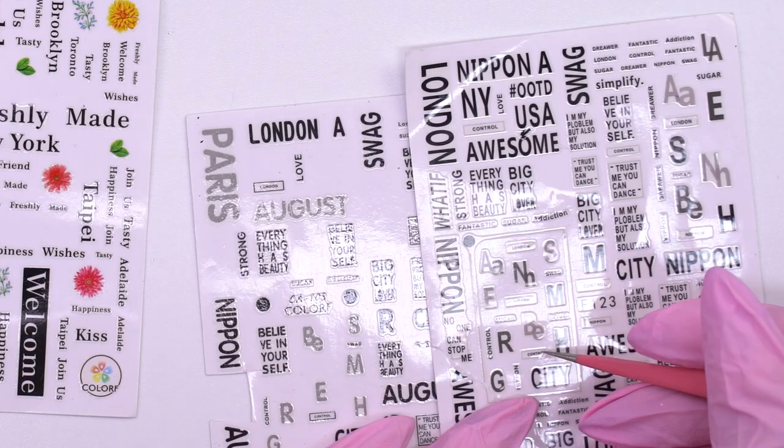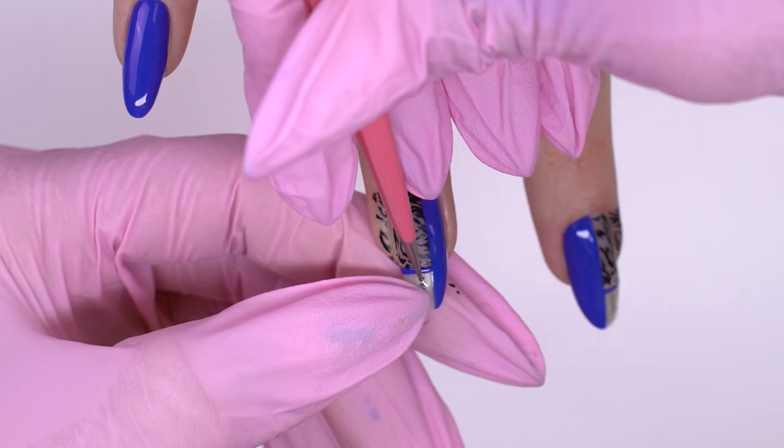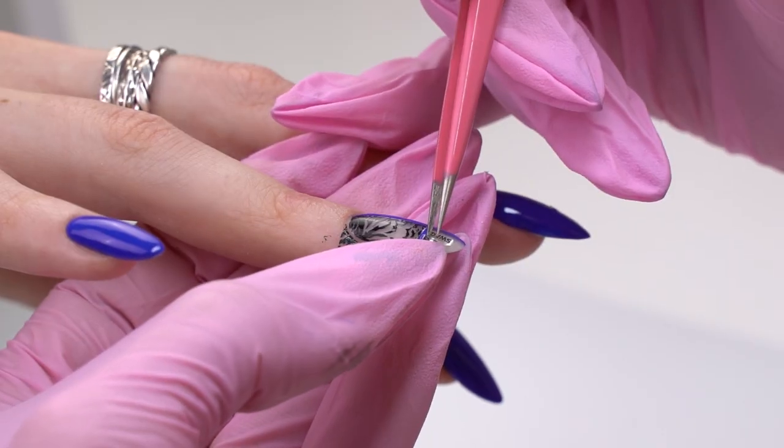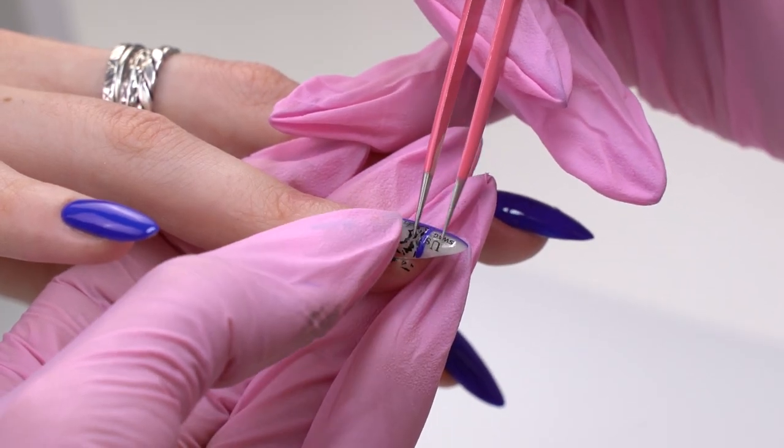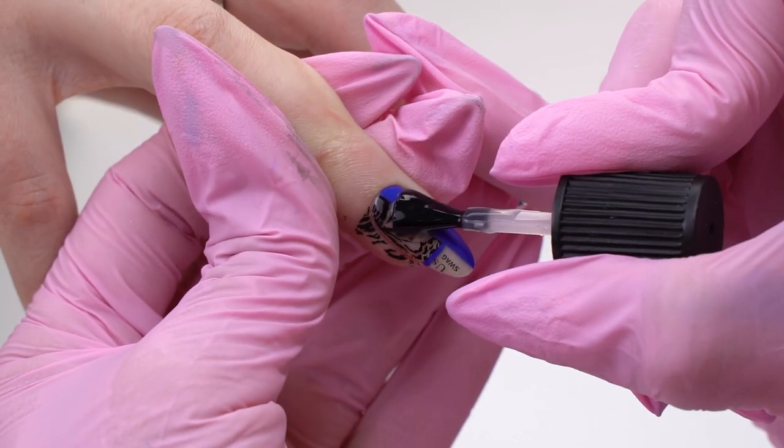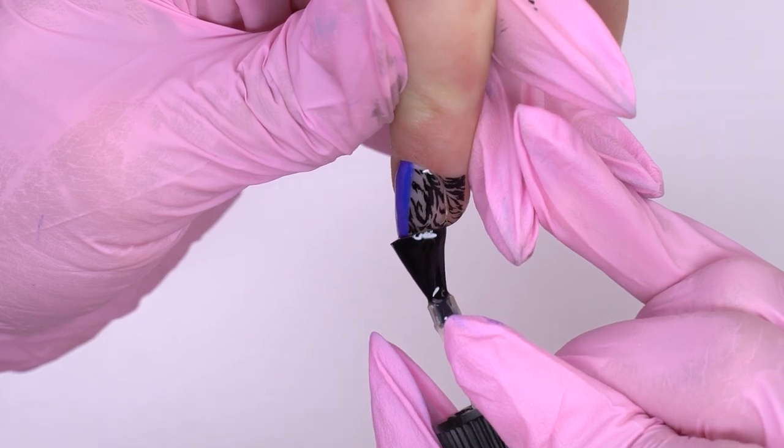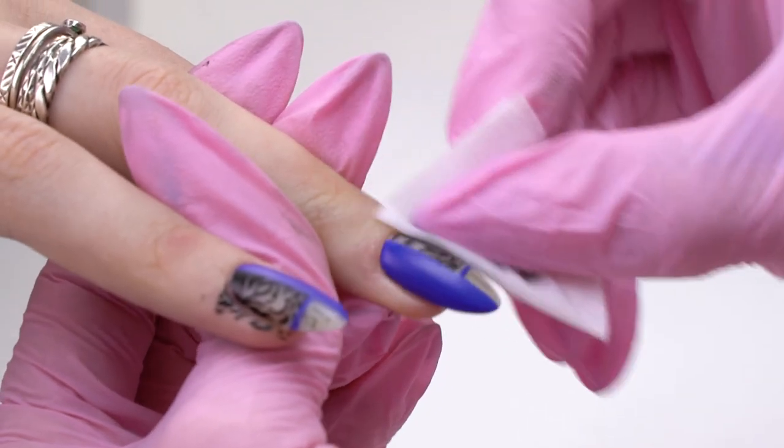I add stickers to the blank areas. Apply a matte top coat. Here, remove the tacky layer. I clean up the stamping paint leftovers with acetone.